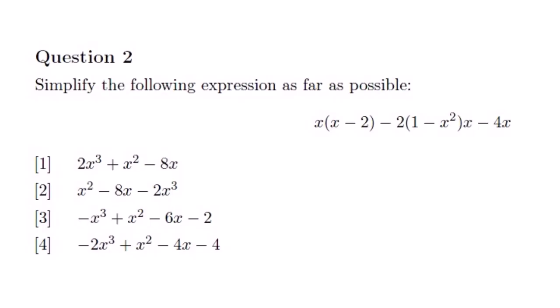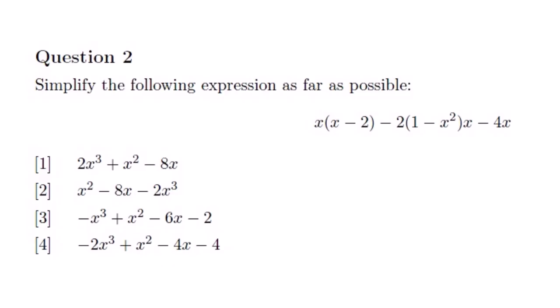This is the actual question extracted from the October/November question paper, which is question 2. The question says simplify the following expression as far as possible. We just need to simplify, meaning we need to get rid of the brackets. Our final answer should not have any brackets. Remember that the opposite process is factorizing, whereby your final answer should have brackets. So simplifying is when we remove brackets; factorizing is when we introduce brackets. We need to multiply a term outside the bracket with the terms inside the bracket, one by one.